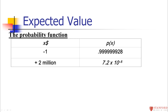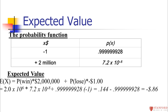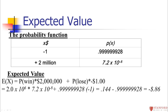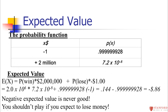To calculate the expected value, we take each x, multiply it by its probability, and add those up. We take negative 1 and multiply it by the very-close-to-1 probability of losing, then take the $2 million and multiply it by the 7.2 × 10⁻⁸ chance of winning. When you add that all up, your expected value is negative 86 cents. In other words, you're expected to lose money. If your expected value is negative, it's not a good investment.